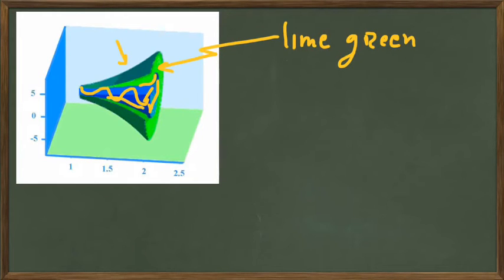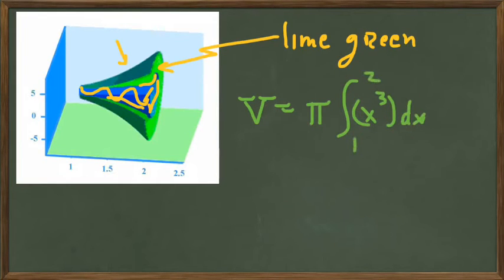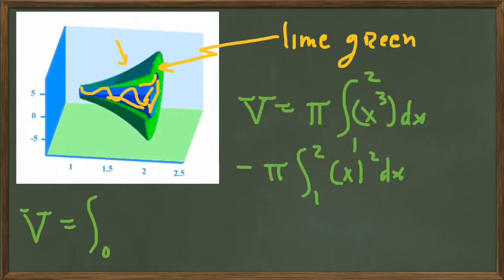What's the setup for that look like? For the outer region, it is pi times the outer curve, which is x cubed squared dx between 1 and 2, and we are subtracting from that the inner region's volume, which is pi between 1 and 2, x squared squared dx. We can combine that into one integral since the limits of integration for both are the same, from 1 to 2, so that is x cubed squared minus x squared squared dx.